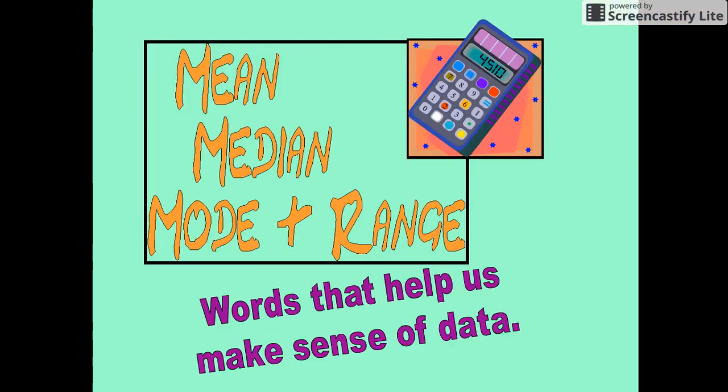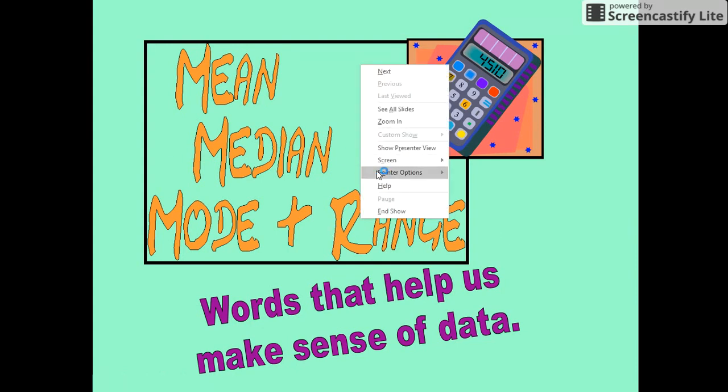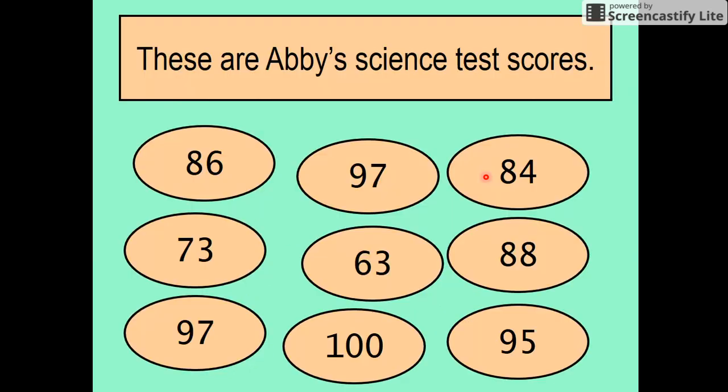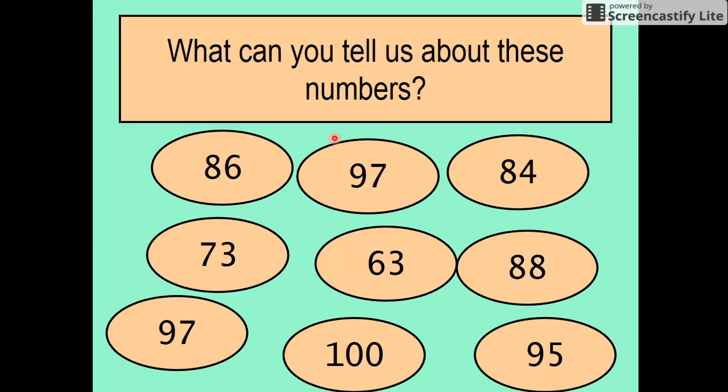Hello everybody, we're looking today at mean, median, mode, and range. We have done this before, you should have done this before in other years, but we're gonna go through it again. So we've got some Abbey's science test scores. Let's see what we can do with them. What can you tell us about these numbers? Let's work mean, median, mode, and range with them.